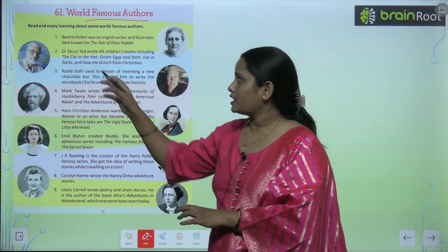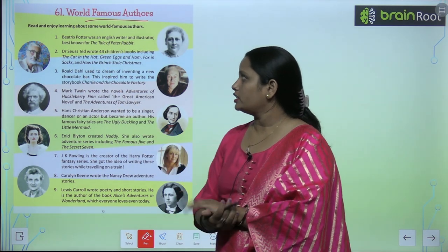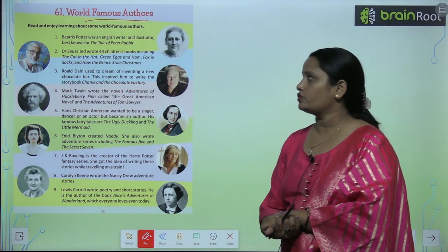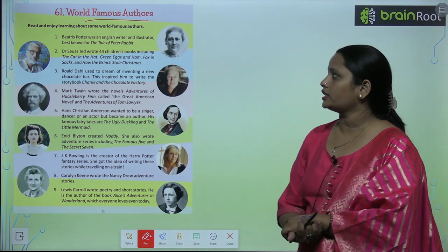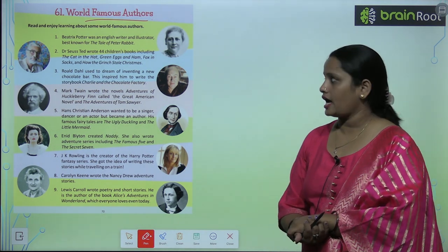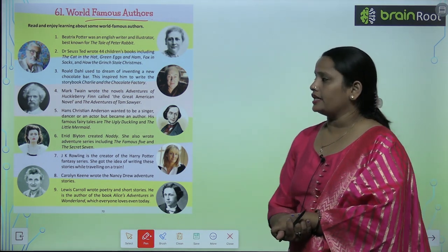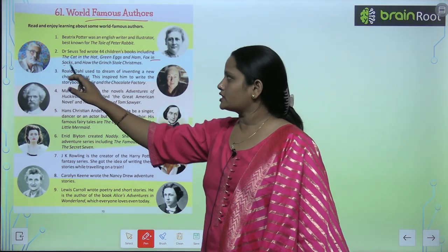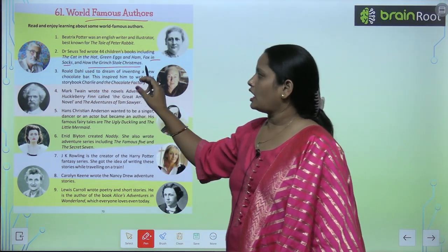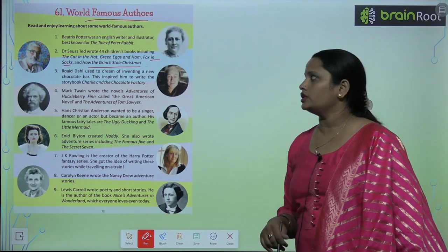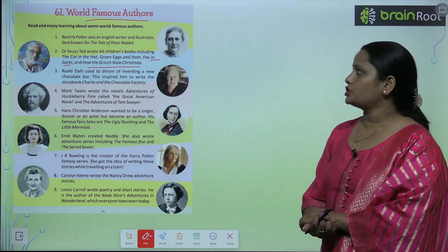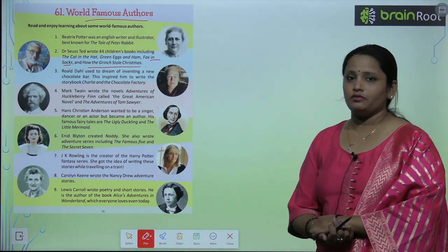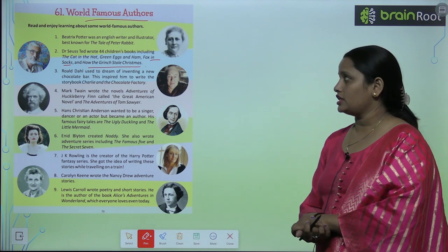Next is Dr. Seuss. He wrote 44 children's books, including The Cat in the Hat, Green Eggs and Ham, Fox in Socks, and How the Grinch Stole Christmas. These are the names of some of his famous children's books.